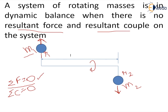Now because these masses are at some distance l from each other, their moments should also equal zero. That means m1·r1·l should be equal to m2·r2·l.